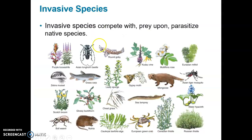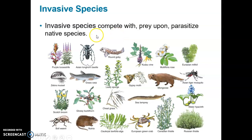Invasive species — we talked about that before. If they are foreign, introduced exotic species that become invasive, it's because they compete with and have outcompeted local species, prey upon them, and/or parasitize native local species. These are just a few examples of invasive species in the United States.